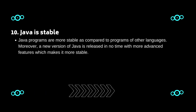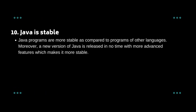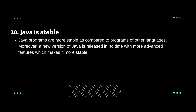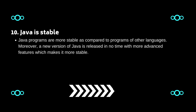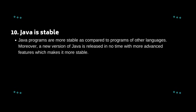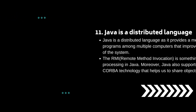Ten: Java is stable. Java programs are more stable compared to programs of other languages. Moreover, new versions of Java are released frequently with more advanced features, which makes it even more stable.